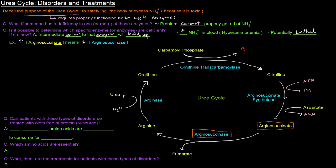The intermediate prior to this enzyme — the one right before it — is arginosuccinate. That's how you can identify a deficiency in one of those enzymes, and that could apply for the other enzymes in the cycle as well.